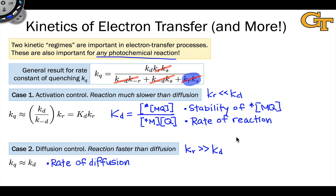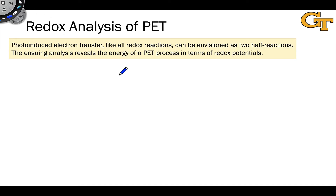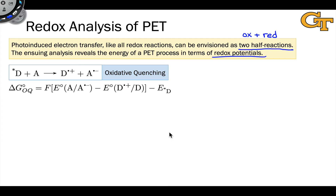Toward the end of this video we'll see this play out when we look at rate constants of various electron transfer processes as a function of their thermodynamic ΔG. But first we need to calculate that thermodynamic ΔG. Like all redox reactions, photo-induced electron transfer can be envisioned as two half reactions — an oxidation process and a reduction process. We can use redox potentials to get a sense of the free energy change, with the wrinkle that we must incorporate the excitation energy of the excited state.